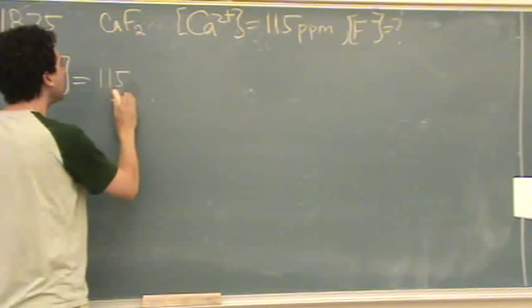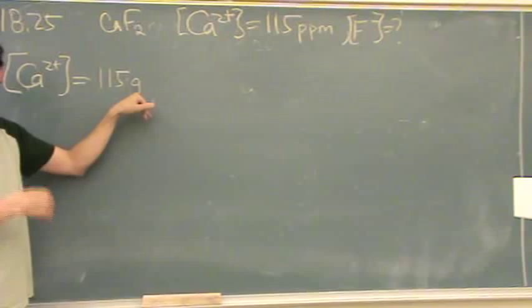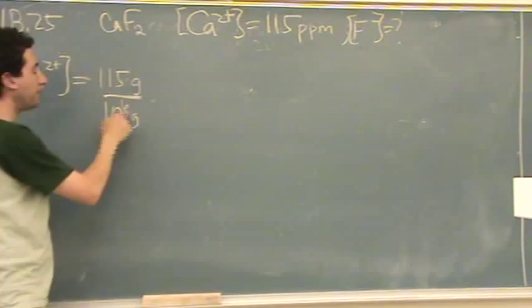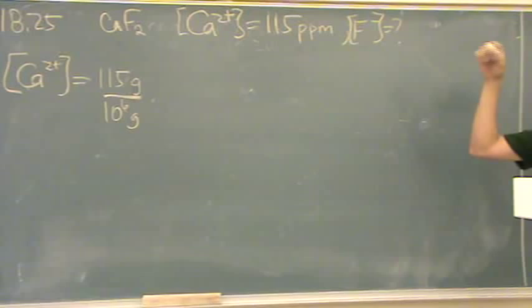1.15 ppm means there's that many grams of it. Remember ppm stands for parts per million. That many parts, and we're going to take our parts in grams. That many parts for a million grams. This is the calcium for a million grams of solution. What we want to do is convert this to molarity. That's moles on top, liters on the bottom.